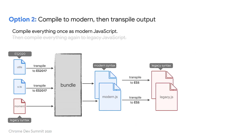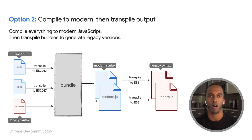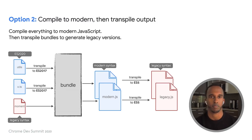The second approach flips things around a bit. We run a single build to generate ES2017 bundles for modern browsers, then we transpile those bundles down to ES5 with polyfills. One great advantage of this approach is that all code — including any dependencies — can be ES2017. Since the whole build assumes modern code, all code can be modern, and it'll all be transpiled when generating legacy versions of bundles.